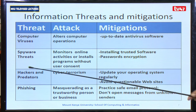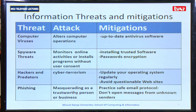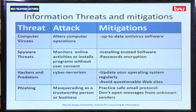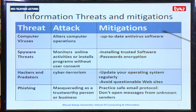The other threat is what we call hackers and predators. An example is cyber terrorism, whereby information can be retrieved from your emails. An attack can be launched to your computer and personal information can be misused, leading to cyber bullying or ransomware whereby you're told to pay so your computer can be released from an attack. Some mitigation measures include updating your operating system regularly so that patches are updated, such as upgrading from Windows 7 to Windows 10, and also avoiding questionable websites.